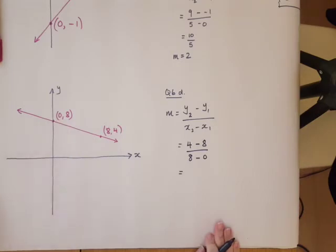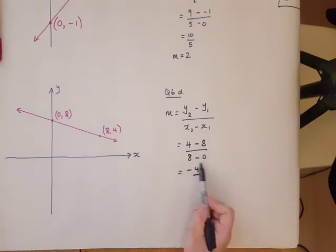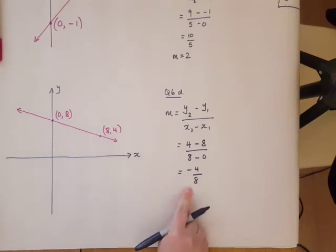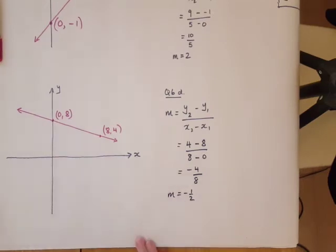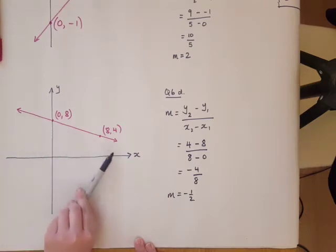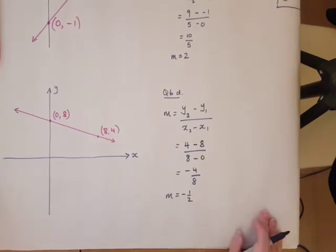So let's calculate this. 4 take away 8, that's negative 4. 8 take away 0, well that's 8. So negative 4 divided by 8, that's negative half. That's your gradient, negative half. And you can see this line, as I move left to right, is going in a downwards direction. So you would expect your m to be a negative number.